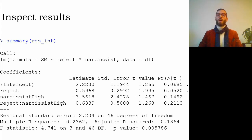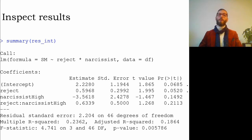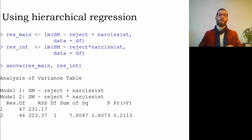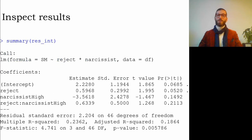This model has an R-squared of 0.24, significant with p = 0.006. But the ANOVA showed this model was not significantly better than the main effects model. This is also reflected in the non-significant p-value of 0.2113 for the interaction term between rejection and narcissism. Both the nested models test and the significance of the interaction term give us the same information.